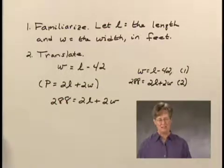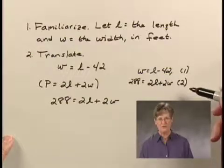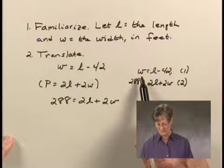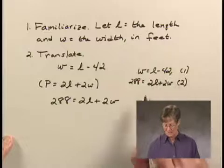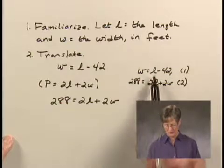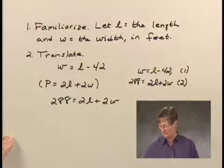Now that we've translated, we want to solve this system of equations. Substitution is a good method to use because we already have one variable expressed in terms of the other. This equation expresses W in terms of L. So we can substitute L minus 42 for W in equation 2 and then proceed with the solution.